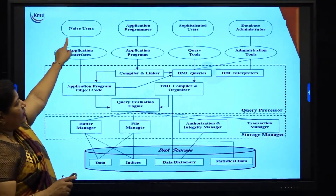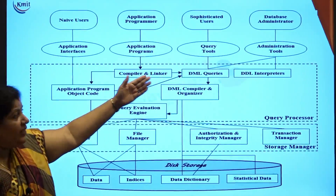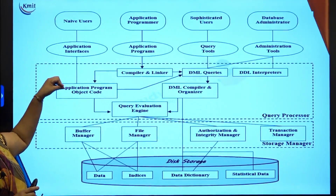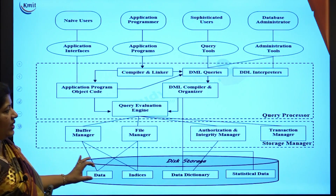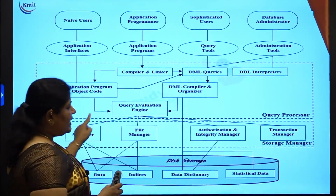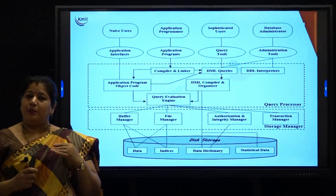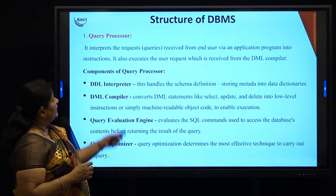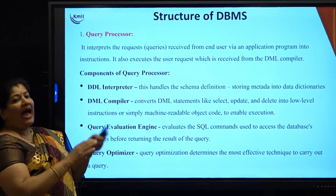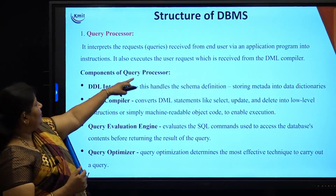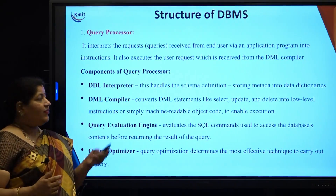Looking at the topmost level, we have different DBMS users. The users are of different types, starting from the database administrator to the naive user who just accesses the DBMS through some application programs or web applications. The major parts of this structure are the query processor, the storage manager, and the disk storage. Let us look into the query processor, which basically interprets the user request through the application program and converts them into machine-level language.